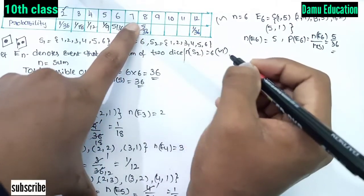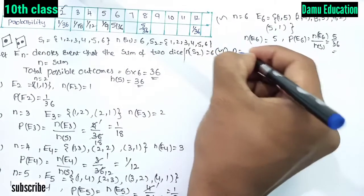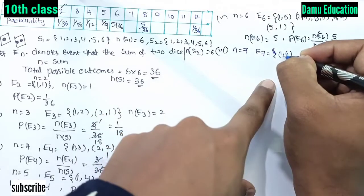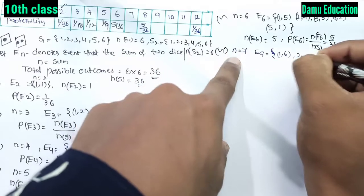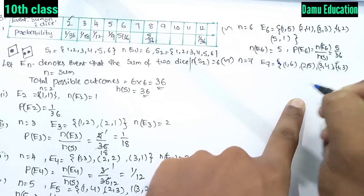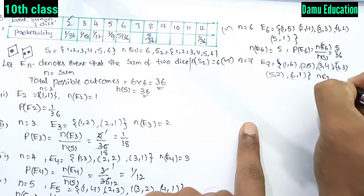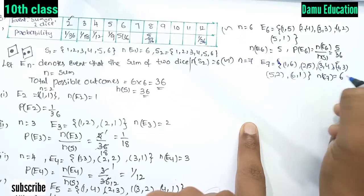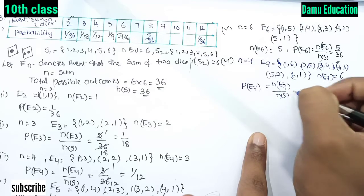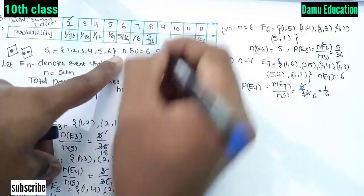For E7, the sum equals 7. The favorable outcomes are (1,6), (2,5), (3,4), (4,3), (5,2), and (6,1). So n(E7) = 6, and P(E7) = 6/36 = 1/6.